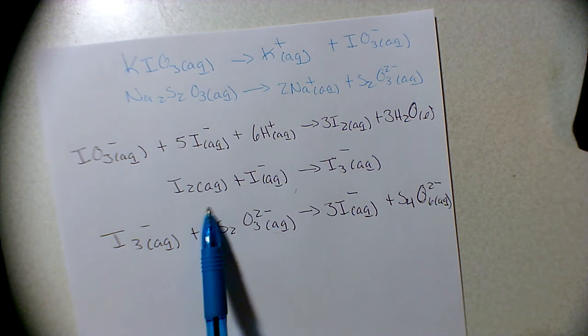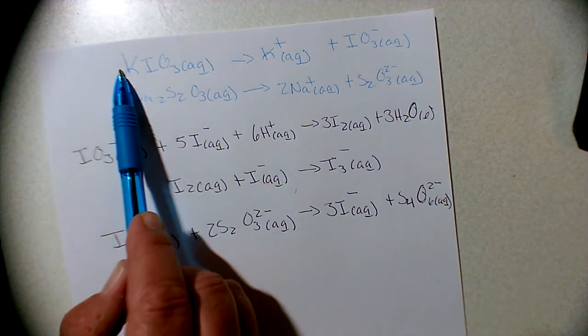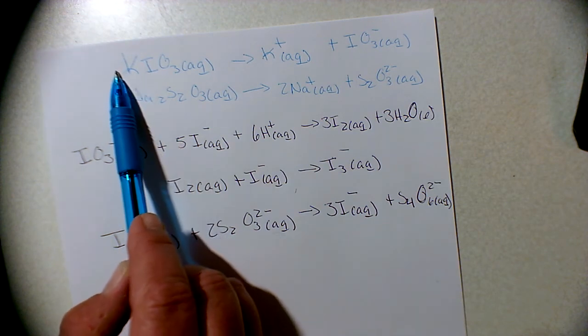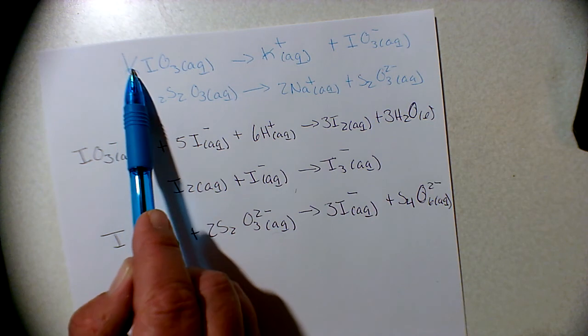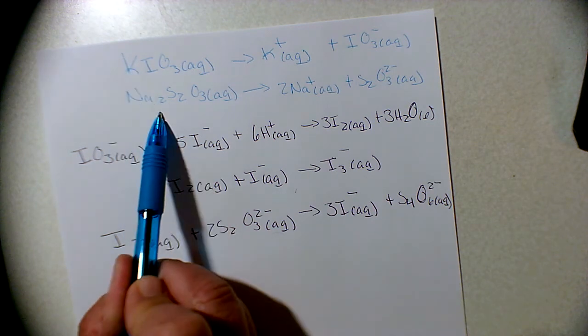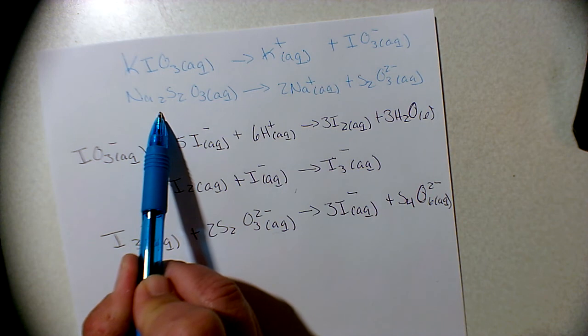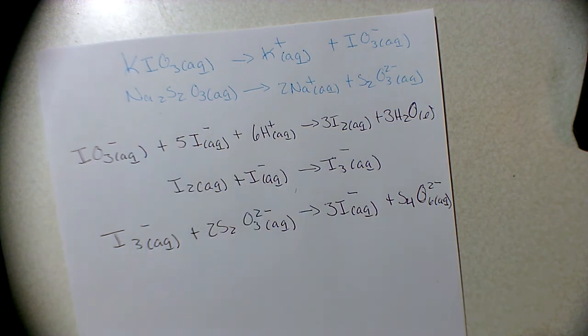You're given the molarity of the potassium iodate. This is the one that you're given, this is your known, and you have a known volume there. You're going to determine the amount of moles or the molarity of the sodium thiosulfate using this process.